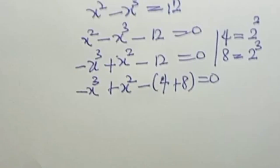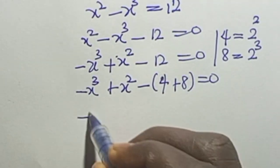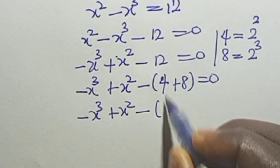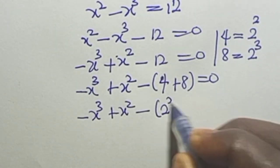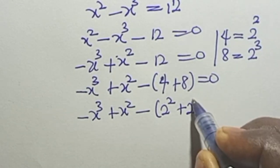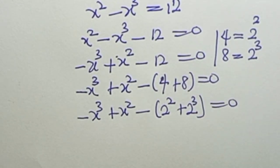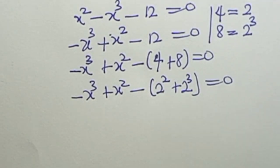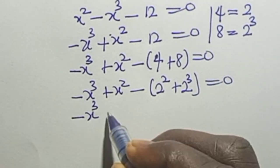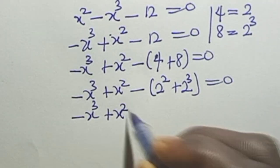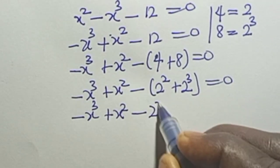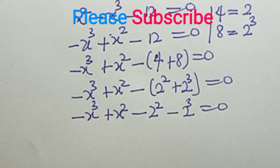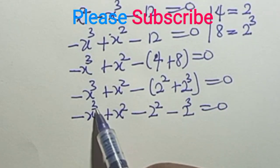This becomes minus s cubed plus s squared minus 2 raised to power 2 plus 2 raised to power 3 equals zero. We allow the minus to open the bracket, so this becomes s raised to power 3 minus s raised to power 2 plus 2 raised to power 2 minus 2 raised to power 3 equals zero.